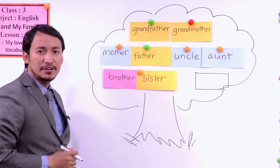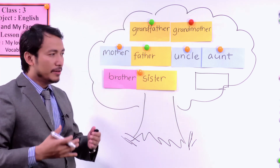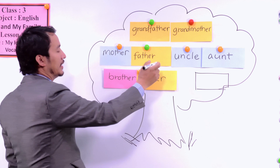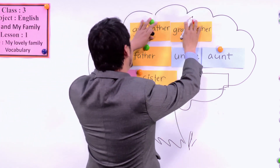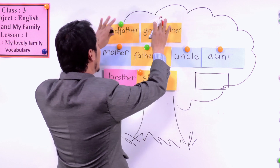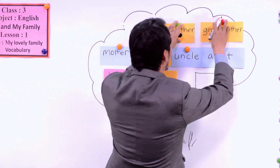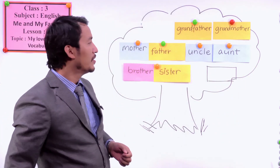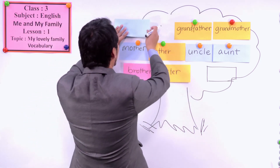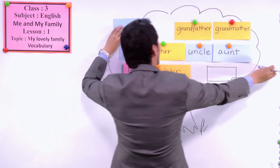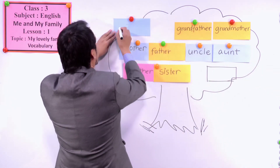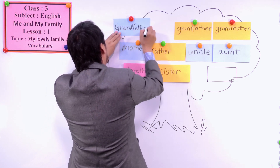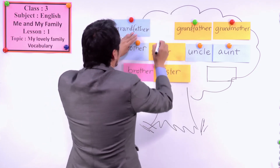Likewise, you can make your family tree. Or if you have a bigger family, you can also talk about another grandfather and grandmother. There are another grandfather and grandmother as well in your family. Who are they? The father of your mother — again, grandfather. We have grandfather and grandmother again.